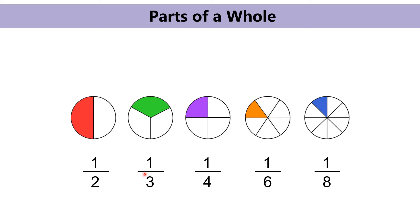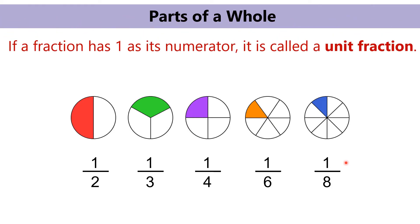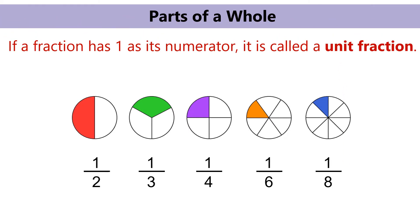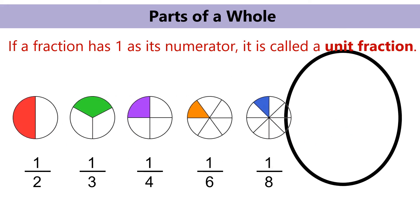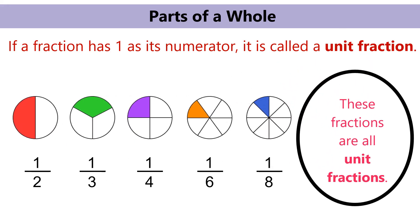Let's look at these five fractions from the previous slide. So we have one half, one third, one quarter, one sixth and one eighth. What do they have all in common? The numerator. The numerator is all one. So if a fraction has one as its numerator, it is called a unit fraction. So all of these fractions are unit fractions.